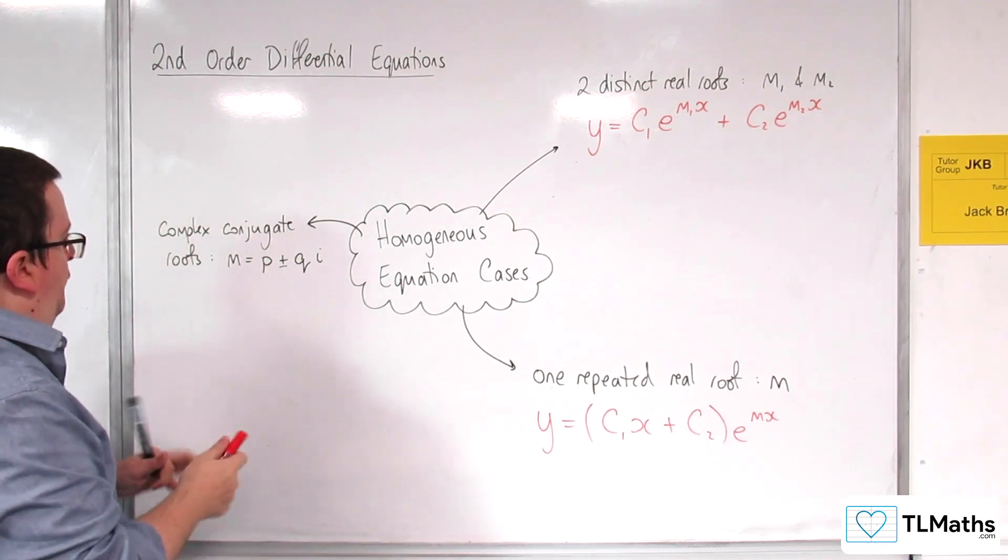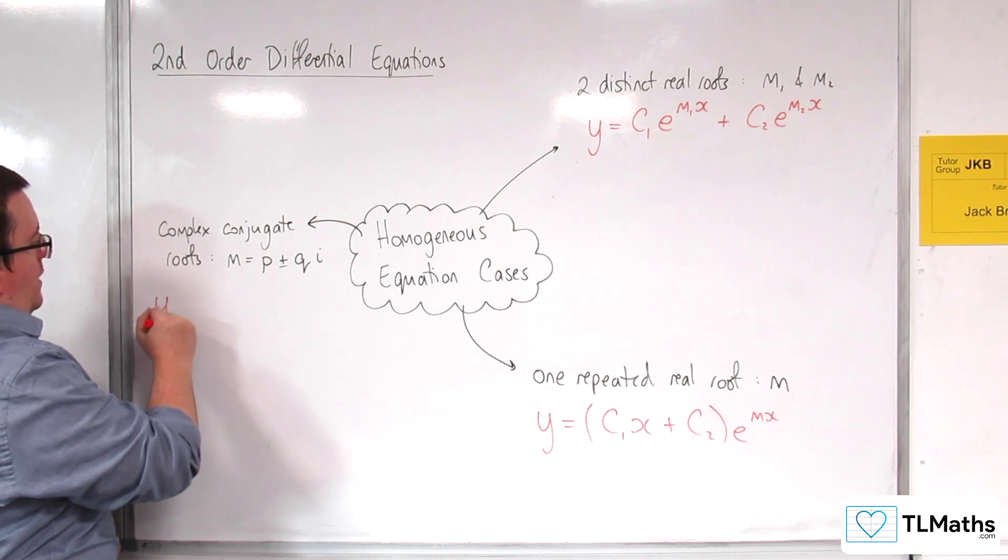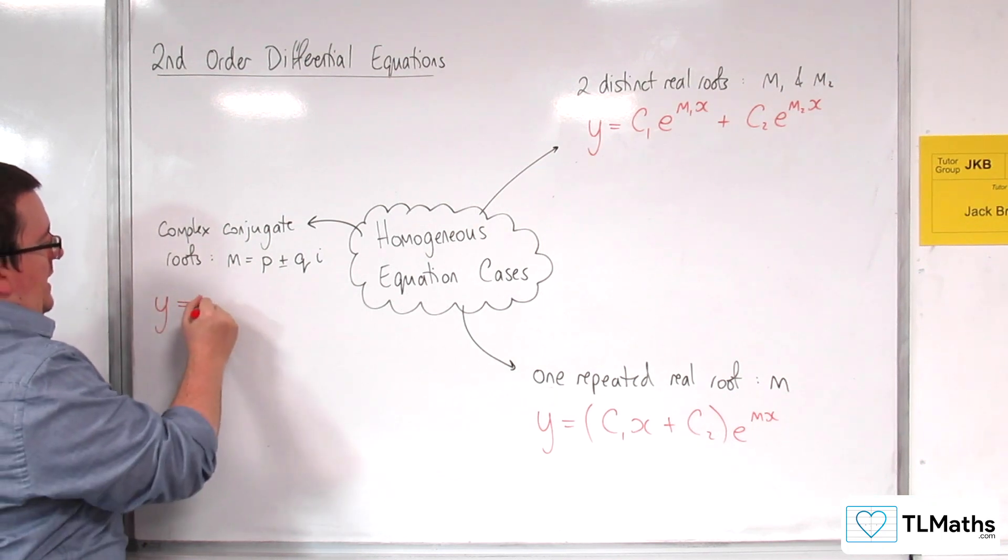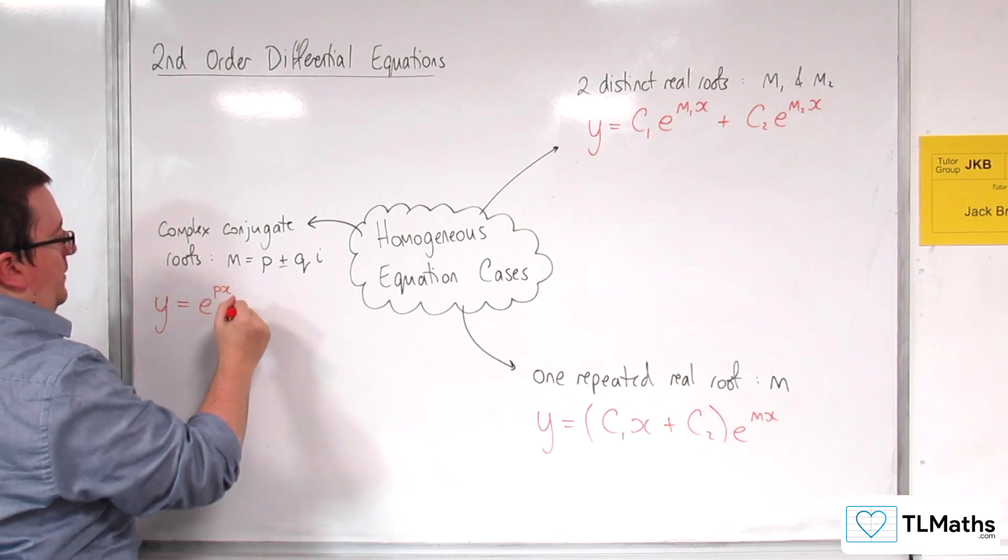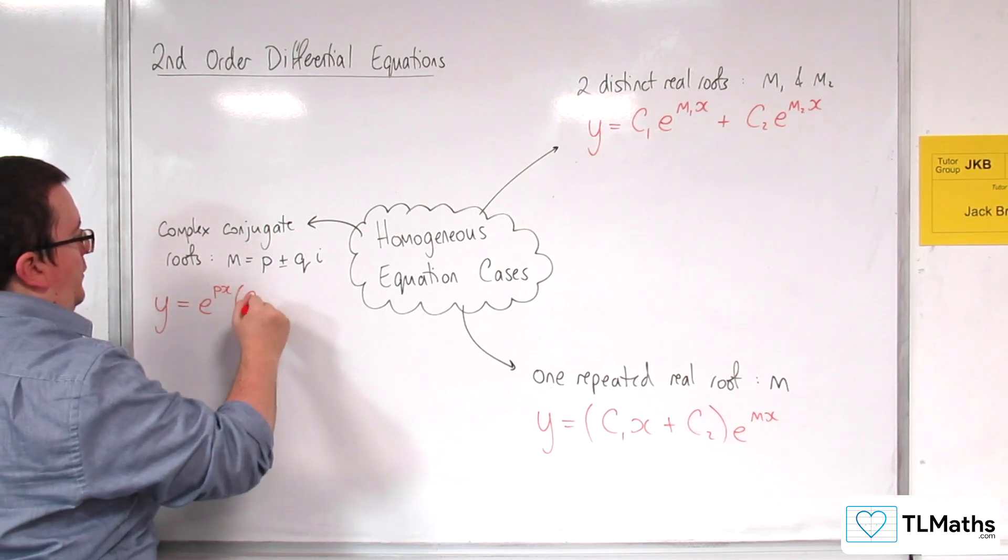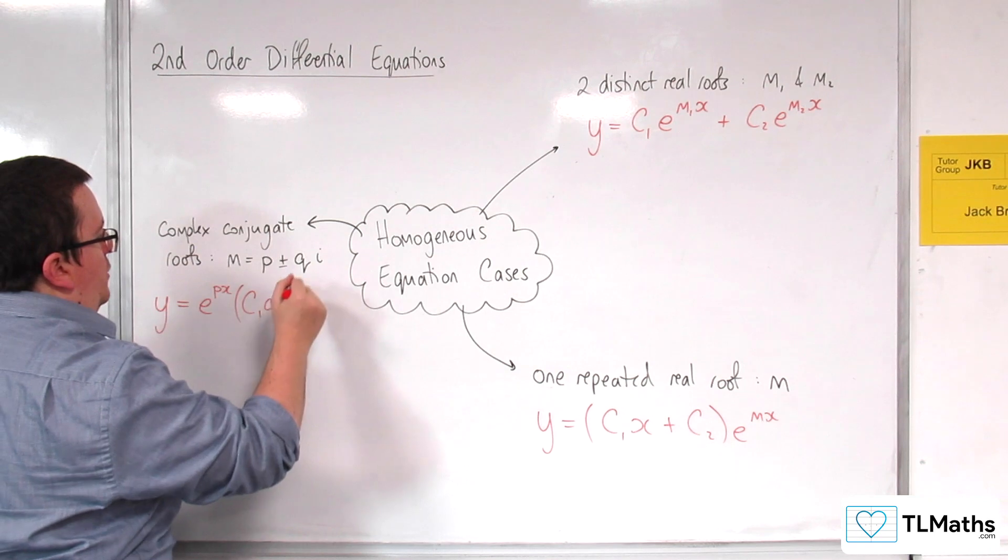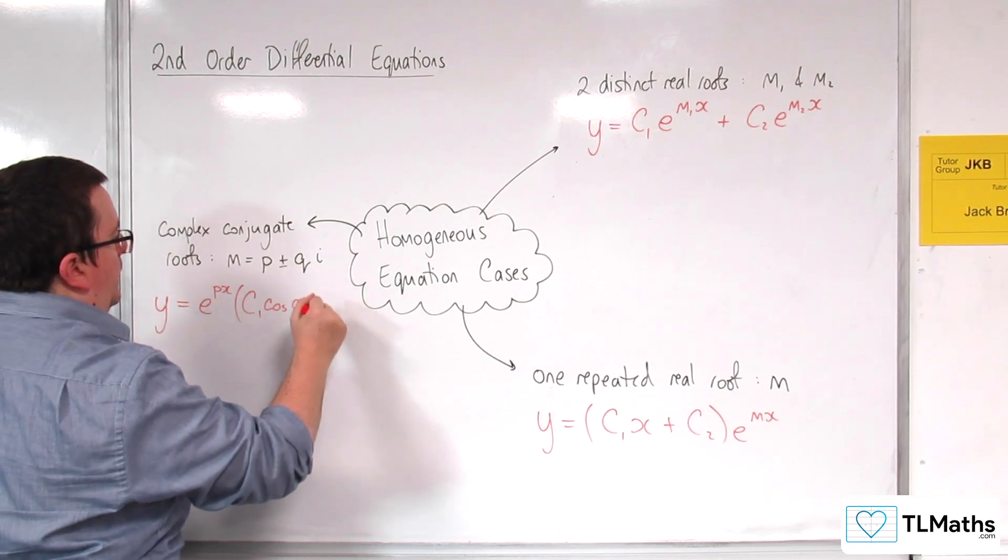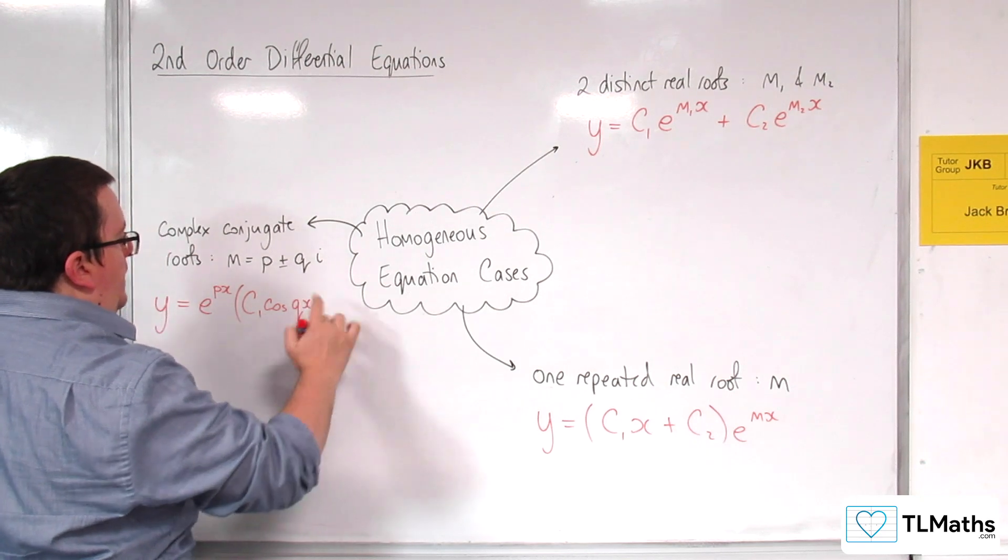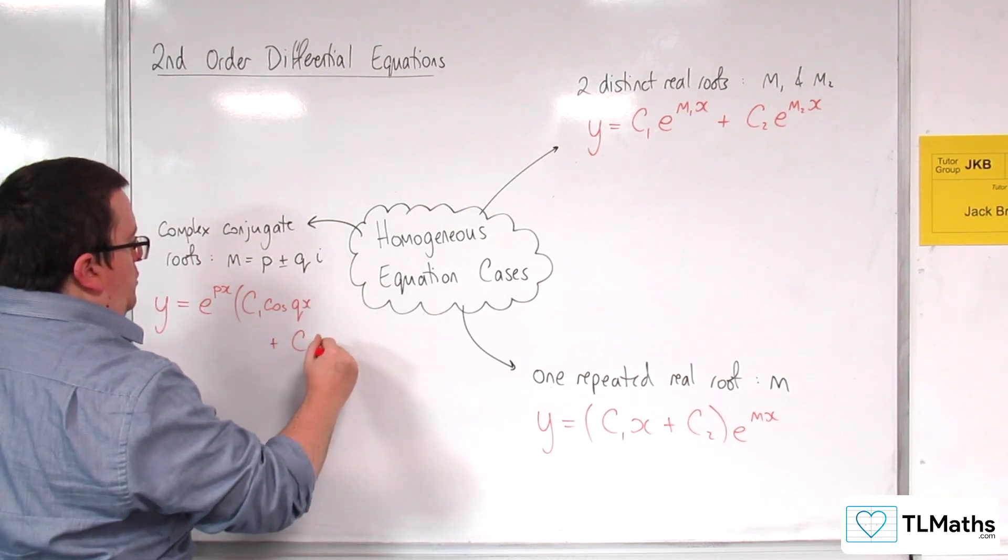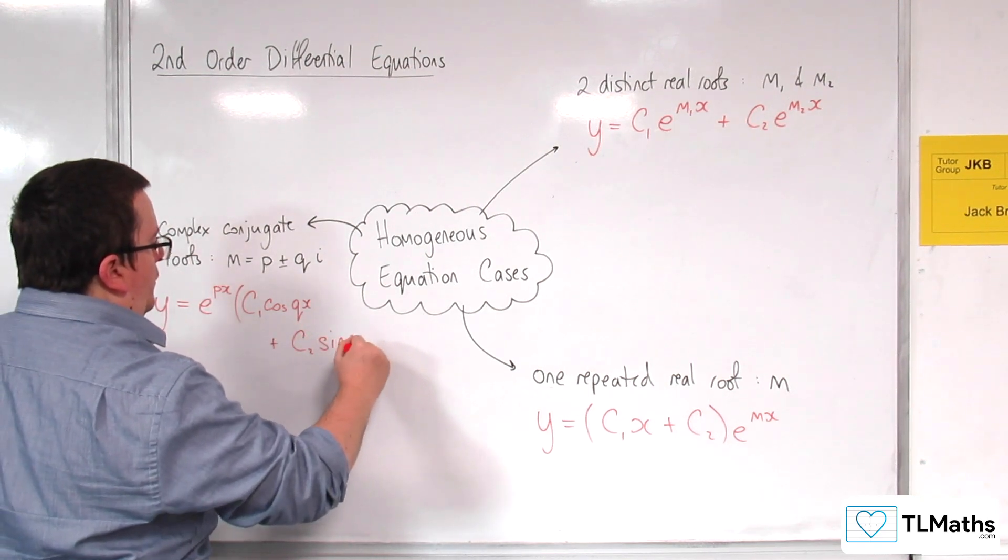Then the format would be y is equal to e to the power of the real part, p times x, open bracket, c1 cosine of qx plus c2 sine of qx.